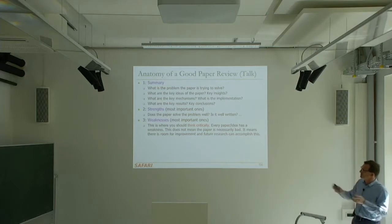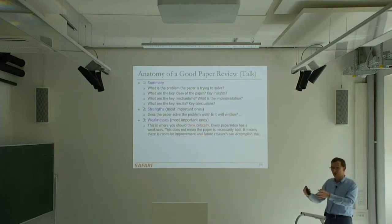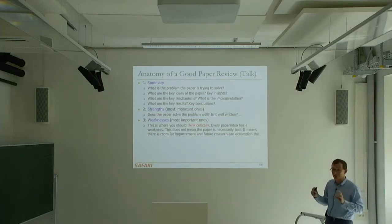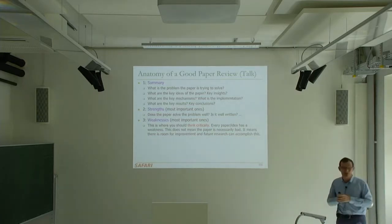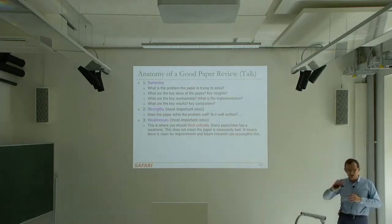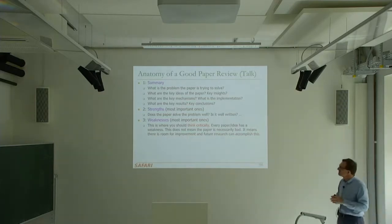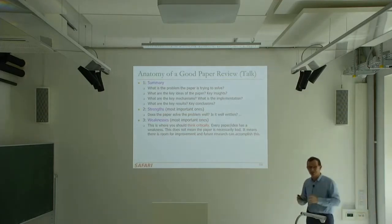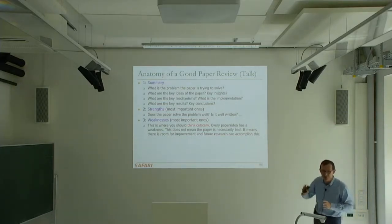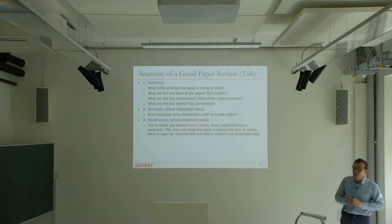Usually the weaknesses of the mechanism are also a problem — maybe the authors forgot to describe some part of the mechanism, or the mechanism has a fatal flaw. That's important to think critically about and harder to find, unless the paper has obvious flaws. Easier flaws to find are usually with evaluation metrics. You can criticize the evaluation much more easily than the mechanism. The mechanism may make sense somehow, but the evaluation you can always criticize — they evaluated workloads X, Y, Z, but not workload T.